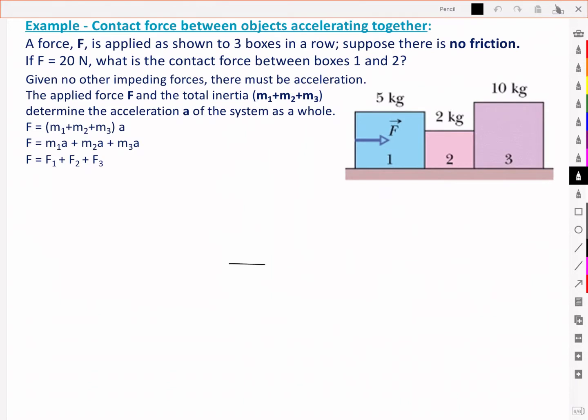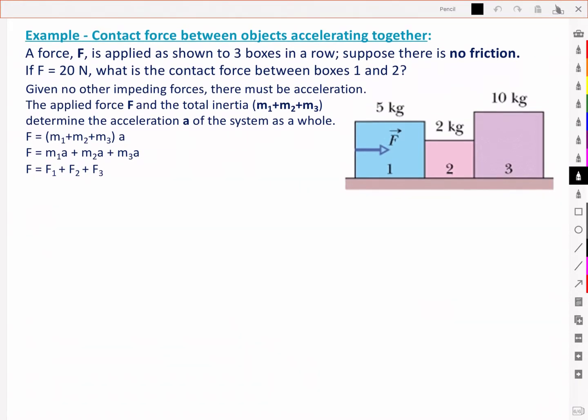Instead now, let's consider an example where there will be motion. A force F is applied as shown to the three boxes in a row. But suppose there is no friction now. If a force of 20 newtons is applied, what is the contact force between boxes 1 and 2?